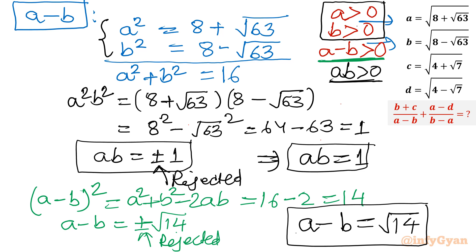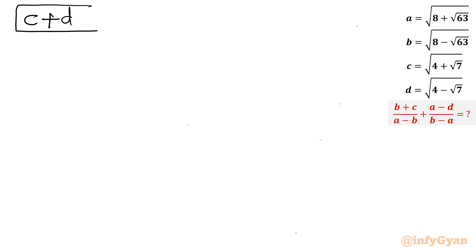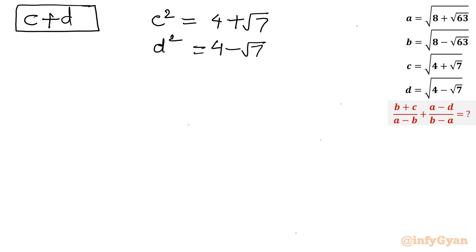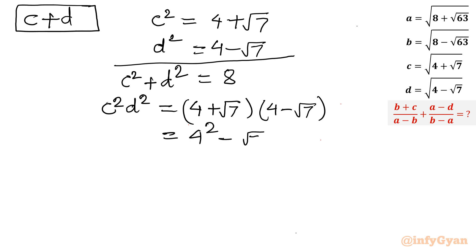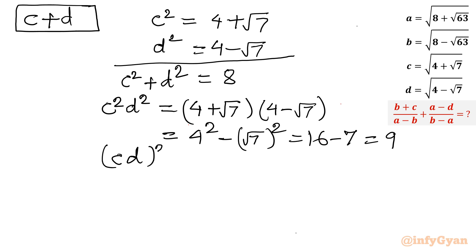Now I will calculate c+d. We have c² = 4 + √7 and d² = 4 − √7. Adding both gives c² + d² = 8. For the product, c²d² = (4+√7)(4−√7) = 16 − 7 = 9. So (cd)² = 9, which means cd = ±3.